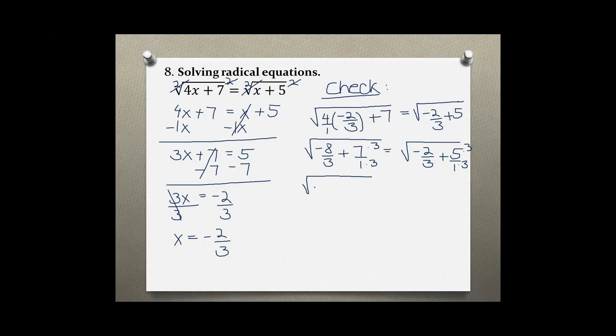Now rewriting this problem I get negative 8 over 3 plus 21 over 3 and that is equal to negative 2 over 3 plus 15 over 3. Now I can add the numerators and I get the square root of 13 over 3 and on the right side adding the numerators together negative 2 plus 15, so 15 minus 2 is also 13 over 3.